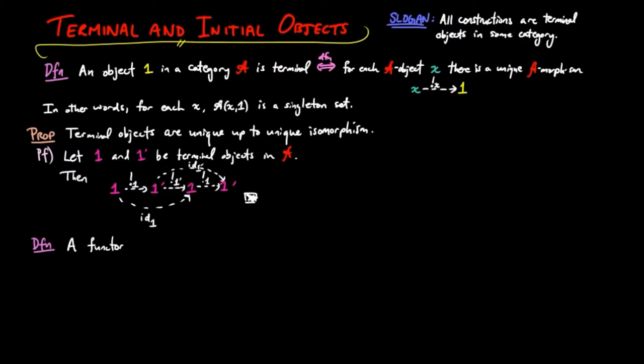And we say that a functor F from category A to a category B preserves a terminal object if and only if F evaluated at the terminal object in A is the terminal object in B.